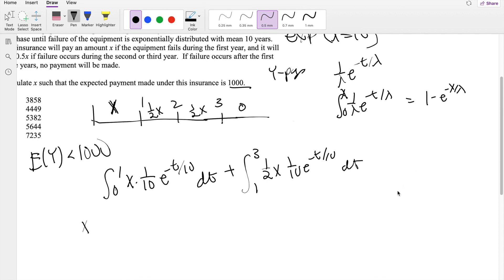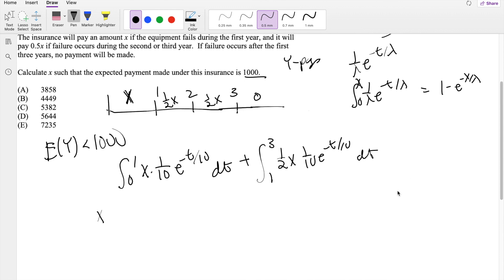This is just something we know about the CDF of exponential function. So we know that this is equal to 1 minus E to the negative 1 tenth plus the second part.